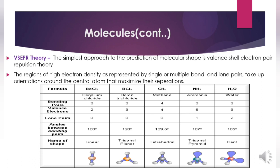Boron trichloride has three bonding pairs, three valence electrons, zero lone pairs, and a bonding angle of 120 degrees; the shape is trigonal planar. Methane has four bonding pairs, four valence electrons, zero lone pairs, and an angle of 109.5 degrees; the shape is tetrahedral. Ammonia has three bonding pairs, five valence electrons, one lone pair, and an angle of 107 degrees; the shape is trigonal pyramidal. Water has two bonding pairs, six valence electrons, two lone pairs, and an angle of 105 degrees; the shape is bent.